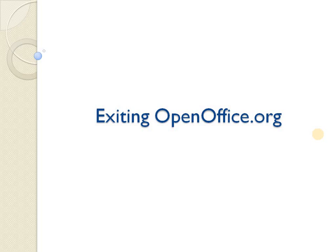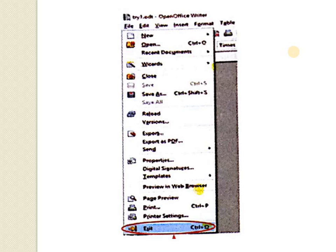Now, how to exit from OpenOffice. Note that closing the file does not close the application. To exit the application entirely, click on File and then select the Exit option. The shortcut for this is Control + Q.